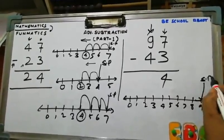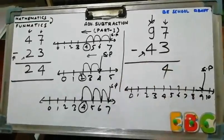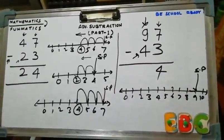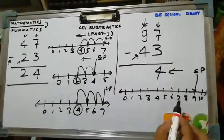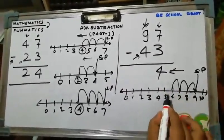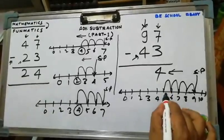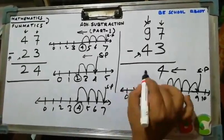This is our starting point and we have to take how many jumps this time? 4 jumps in reverse direction. So 1st jump, 2nd jump, 3rd jump and 4th jump. Where we reached? Where is that? 5.